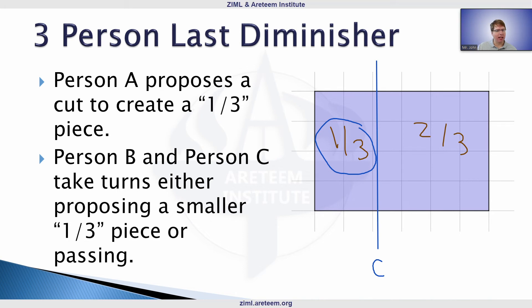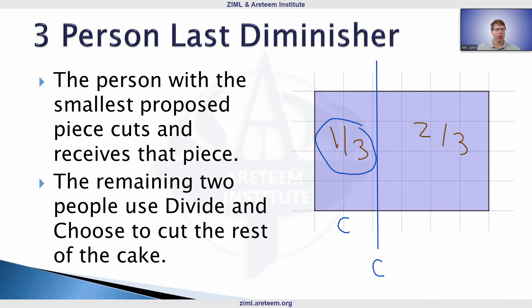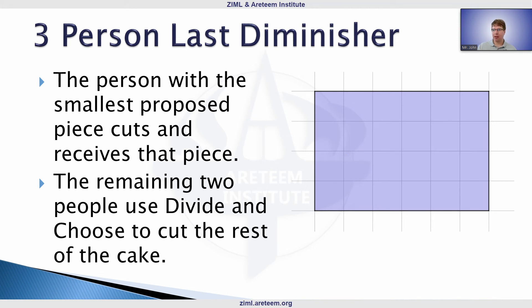At the end, whoever proposed the smallest piece makes the final cut and receives that piece of cake. So in this scenario, C would get the remaining smallest piece, and then the other two people — A and B — use divide and choose on the remaining two-thirds. Alternatively, if B proposed the smaller cut, B gets that piece and A and C divide the rest.